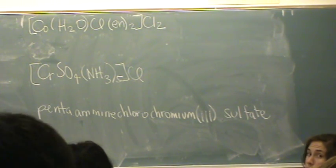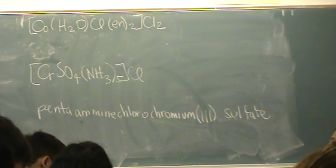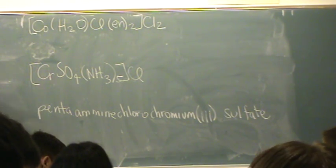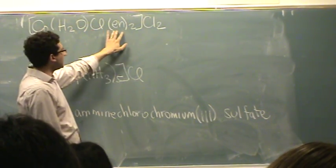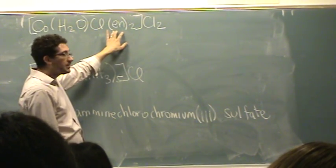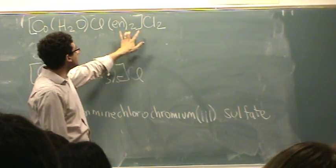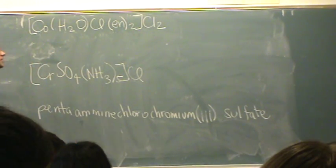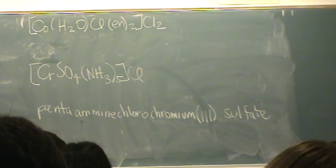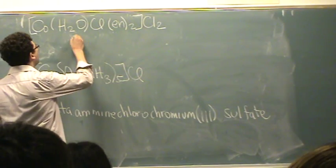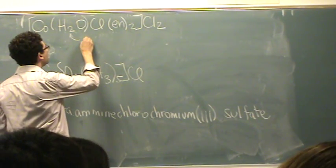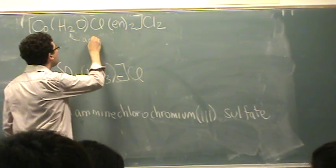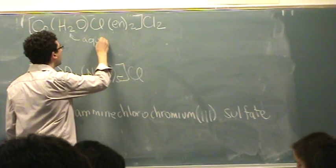Okay, let's name these. So we've got cobalt, a water, a chlorine, and En sub 2, close brackets, point 2. Kind of a tough one. So this water is called what? Aqua. There's only one,